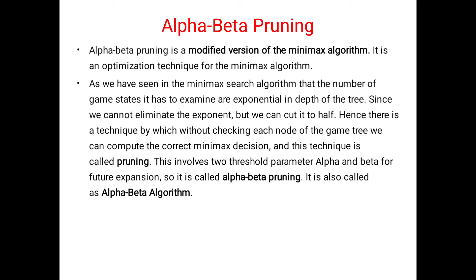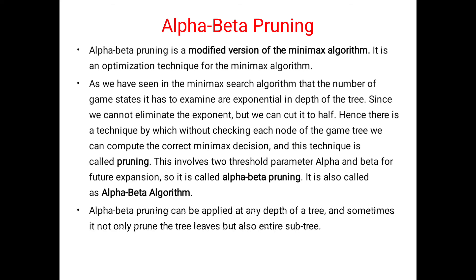In the minimax searching algorithm, the number of game states it has to examine is exponential in the depth of the tree. Since we cannot eliminate the exponent, we can cut it in half. In minimax, we find out each and every node's values, but in alpha beta pruning, with the help of pruning, we reduce the number of nodes by considering one condition.